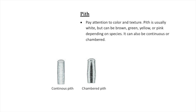Inside the twig you can find the pith, which might be continuous or chambered. The continuous pith may vary in color, and in the chambered pith you'll notice spaces within the stem. You can see the pith by breaking the twig in half or shaving off toward the center of the twig.